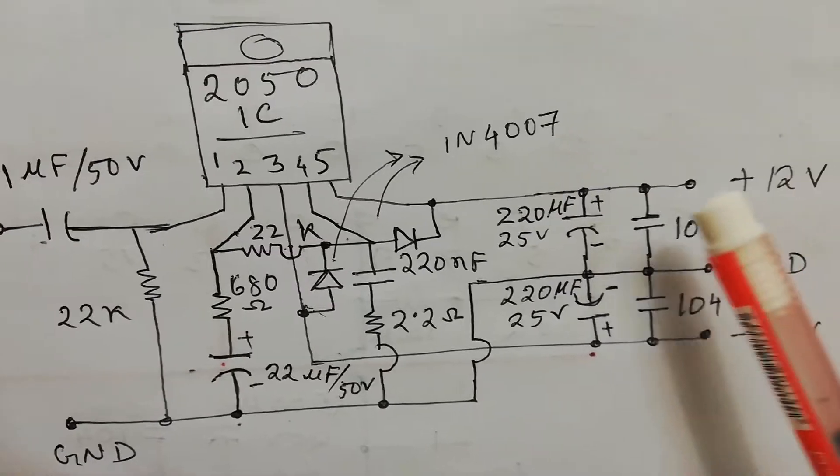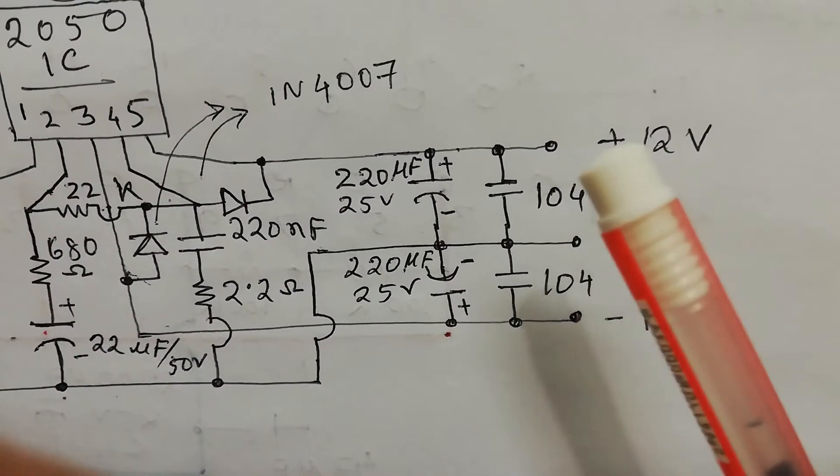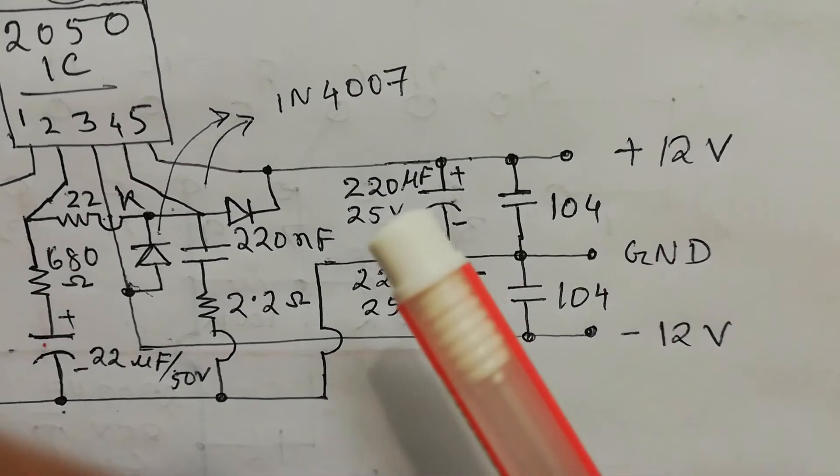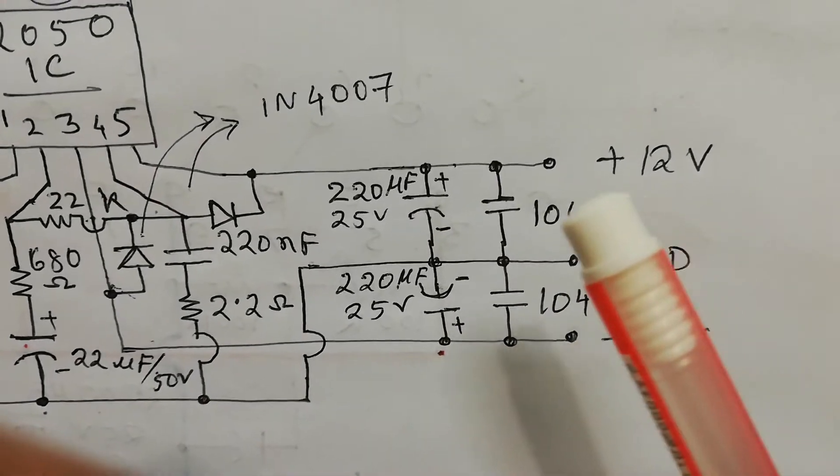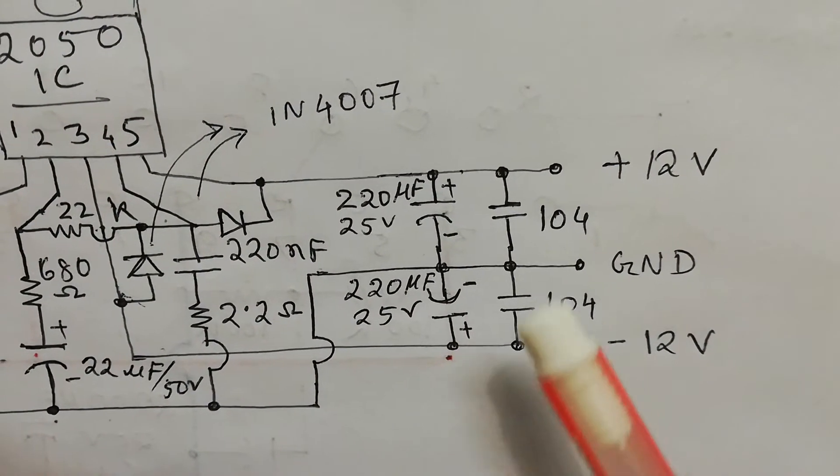From pin number four I used 220 nanofarad capacitor along with 2.2 ohm resistor to the ground. And this is the power section filtering. Here I used 104 capacitor and 220 microfarad 25 volt capacitor from positive 12 volt to ground and from negative 12 volt to ground.